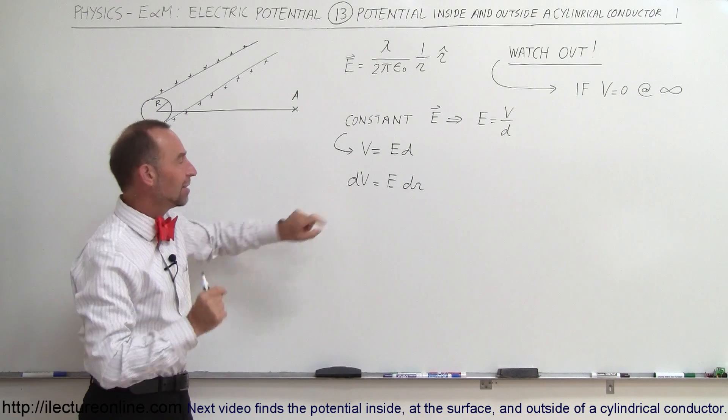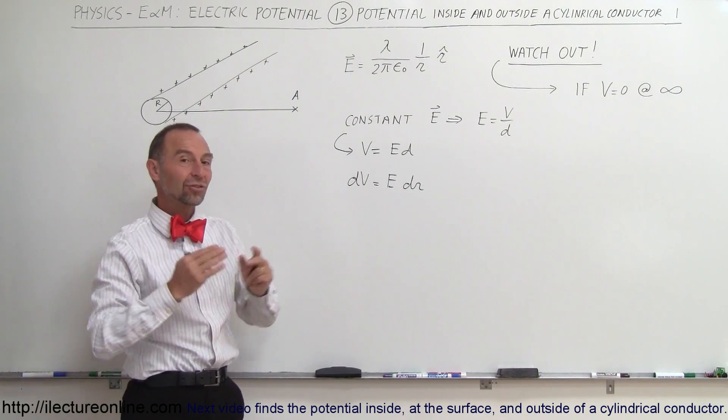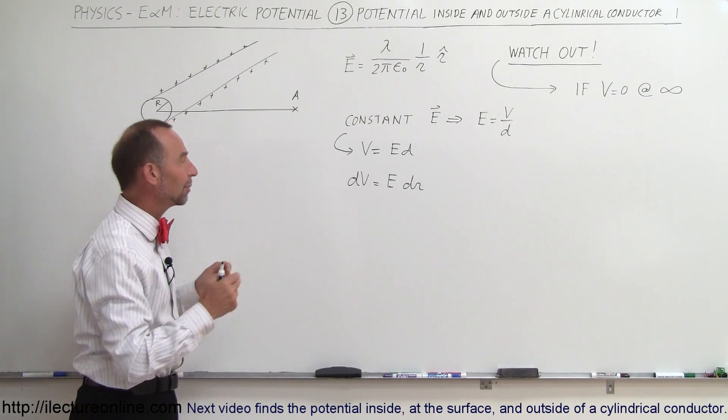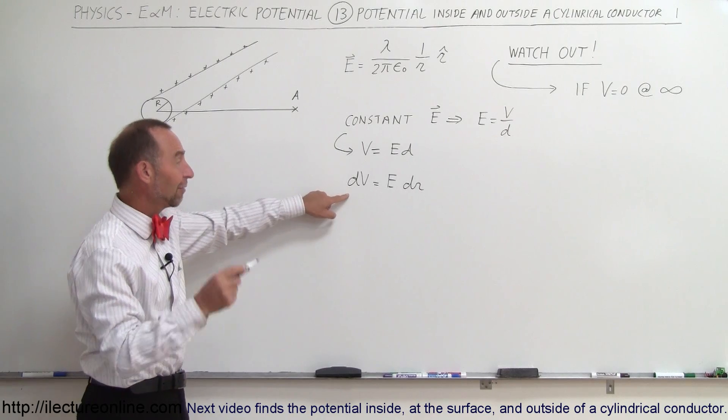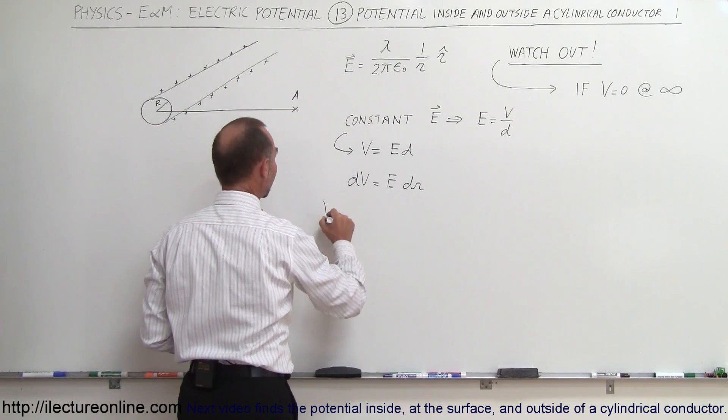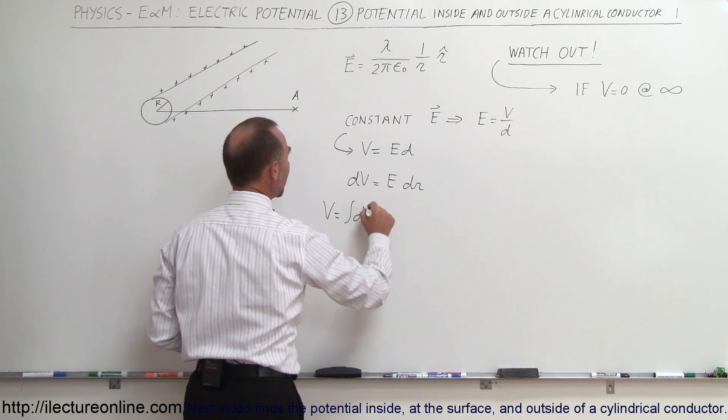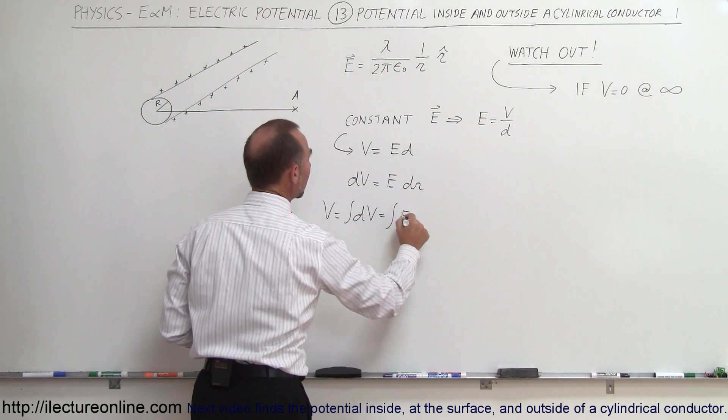We can then calculate a fixed dV for that, but then if we want to find the entire delta V, the entire difference in potential, then we have to integrate. And then we can say that V is equal to the integral of dV, which is equal to the integral of E dr.